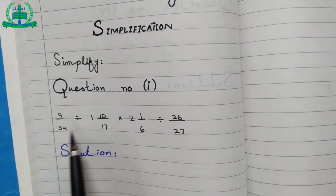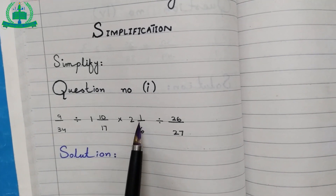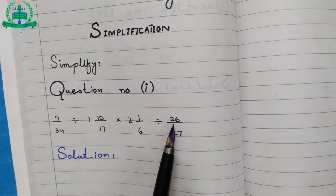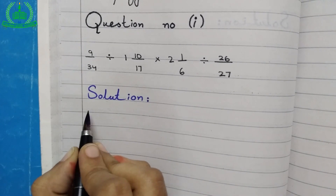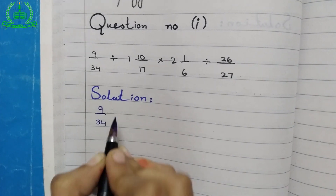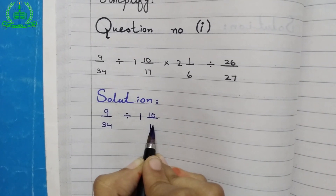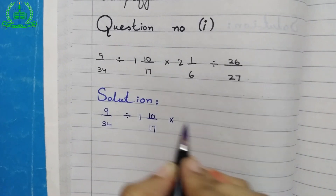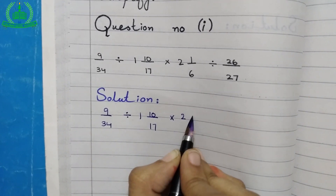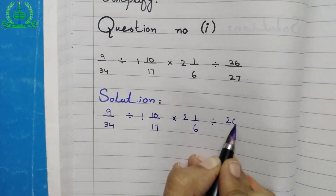The question is: 9 upon 34, divide, 1 whole 10 upon 17, multiply, 2 whole 1 upon 6, divide, 26 upon 27. First step: write the question — 9 upon 34 divide 1 whole 10 upon 17 multiply 2 whole 1 upon 6 divide 26 upon 27.